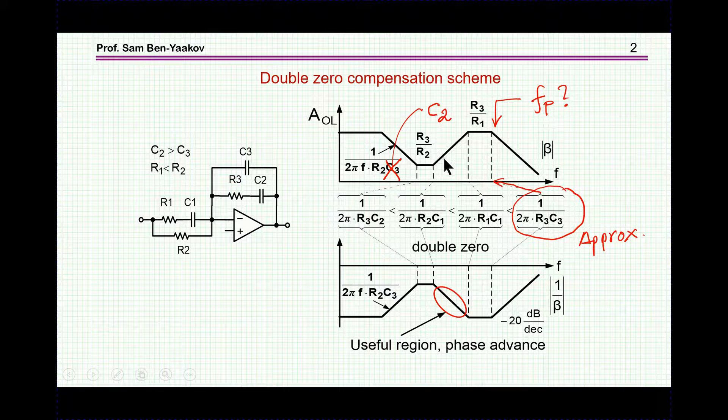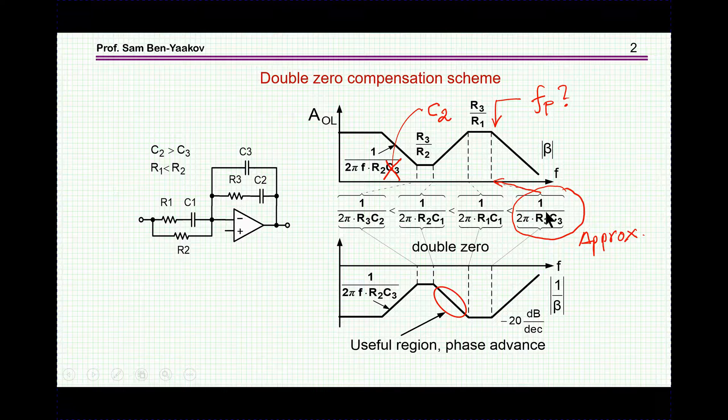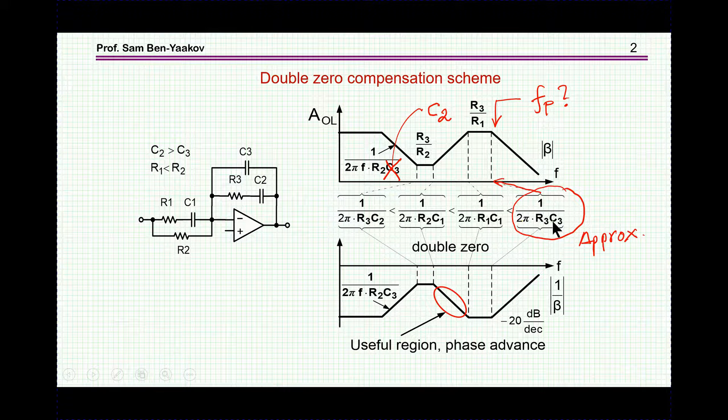However, I'm interested in this presentation in this pole here, the location of this pole. Approximately under these conditions, this pole is 1 over 2π R3 C3, the location of this pole here.